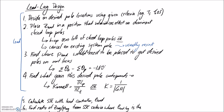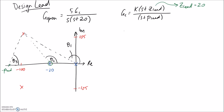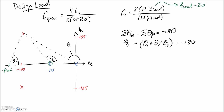The equation we need to satisfy is: the sum of zero angles minus the sum of pole angles equals negative 180 degrees, in order for our desired pole to sit on the root locus. We only have one zero with angle theta 2, and three poles with angles theta 1, theta 2, and theta 3. With pole-zero cancellation, theta 2 minus theta 2 cancels out, and the negatives on both sides also cancel, leaving us with theta 1 equals theta 3 as the equation to satisfy.